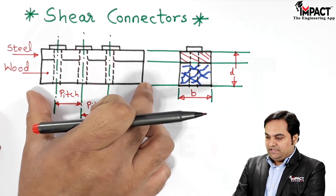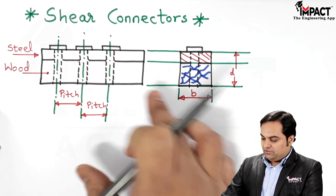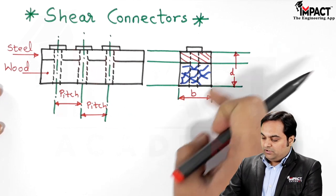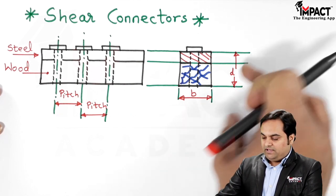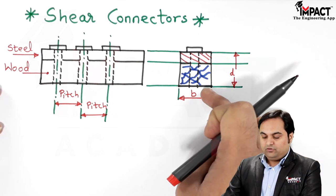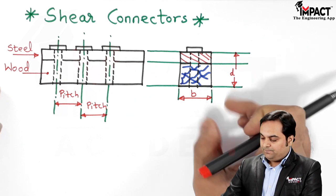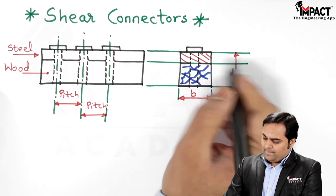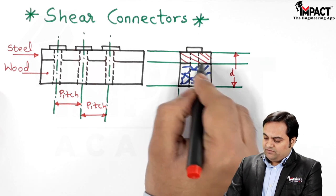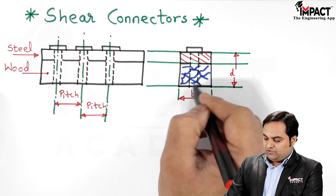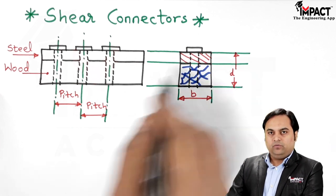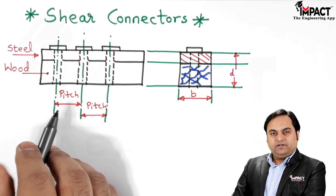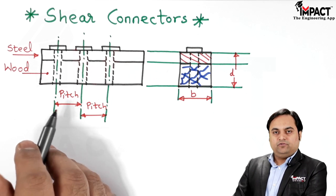From the cross-section view, the width of the section is B and the depth is D, giving us a uniform cross section. The top surface follows the convention for steel and the bottom is the convention for wood. We need to know this pitch so we can connect these two different materials for the composite beam.